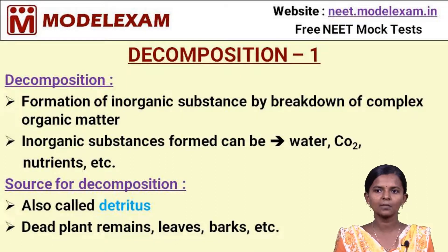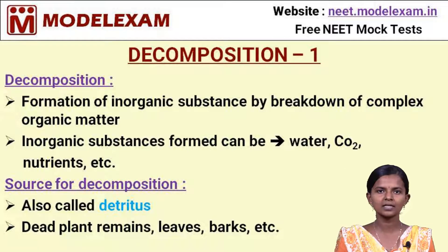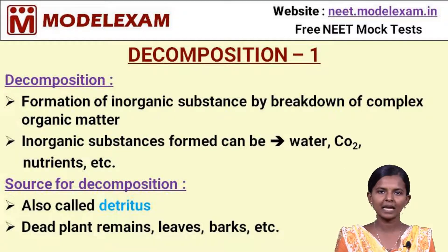The source for decomposition is the dead plant remains such as leaves and barks. This is also called detritus, which is the main source for the inorganic substances produced from organic matter.